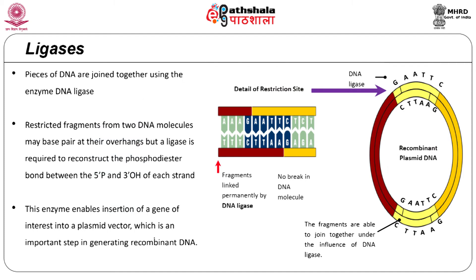Ligases are used to covalently link or ligate fragments of DNA. In genetic engineering, they are commonly used to ligate a fragment of DNA — usually the gene of interest — into a plasmid vector, which is an important step in generating recombinant DNA molecules. Most ligases join breaks in each single strand. The optimum temperature for T4 DNA ligase activity is 37 degrees centigrade, which is used for ligation of blunt-ended fragments. However, sticky ends are too short to form a stable duplex at this temperature, so the reaction is carried out at a lower temperature.